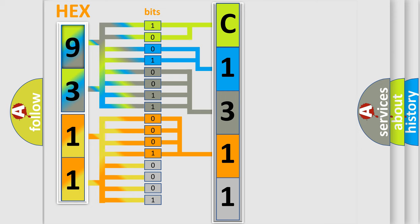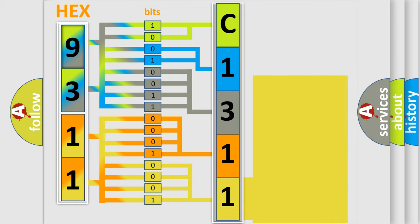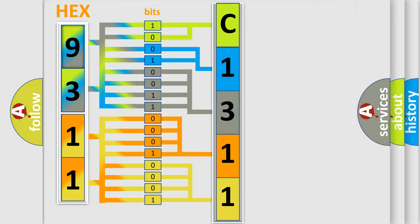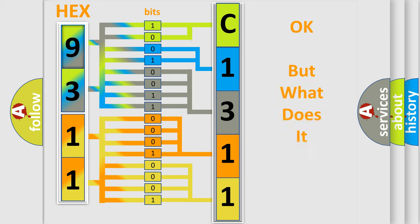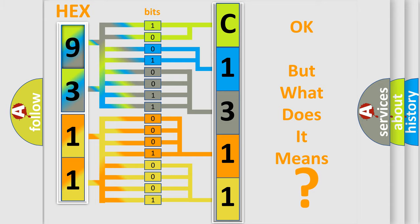A single byte conceals 256 possible combinations. We now know in what way the diagnostic tool translates the received information into a more comprehensible format. The number itself does not make sense to us if we cannot assign information about what it actually expresses. So, what does the diagnostic trouble code C1311 interpret specifically for Nissan car manufacturers?